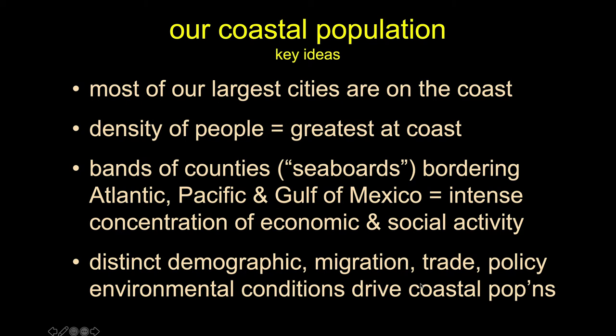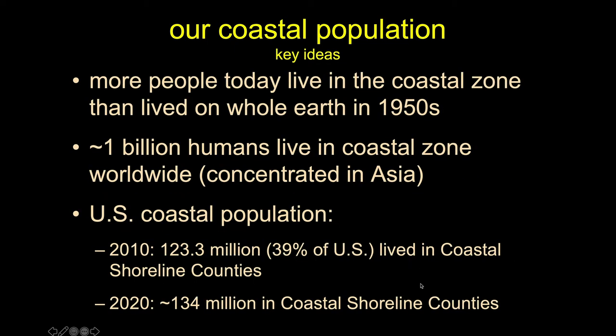In the United States, we have different bands of counties, which we usually call seaboards — a political and sociological construct for chunks of land adjacent to the different coastlines of our country. These are usually centers of intense social and socioeconomic activity that have strong influences way beyond their immediate geographies. Our coastal residents are distinct in terms of demographics, patterns of movement, economic activities, and so on. We have a distinct coastal population that's separate from the rest of the land.